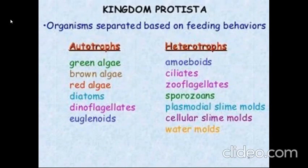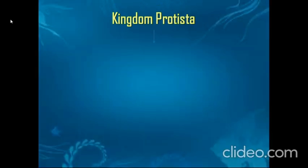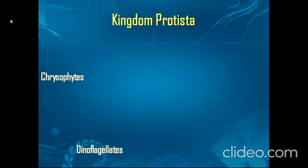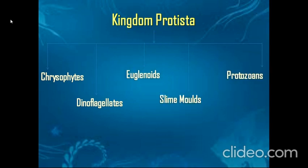Green algae, brown algae, red algae, diatoms, dinoflagellates, and euglenoids are some examples of autotrophs. Amoeboids, ciliates, zooflagellates, sporozoans, and plasmodial slime molds are some examples of heterotrophs. Kingdom Protista is subdivided into 5 different types: chrysophytes, dinoflagellates, euglenoids, slime molds, and protozoans.